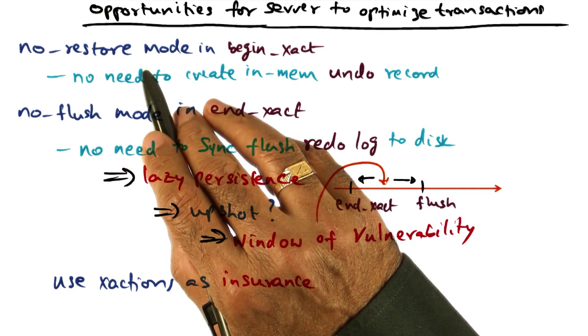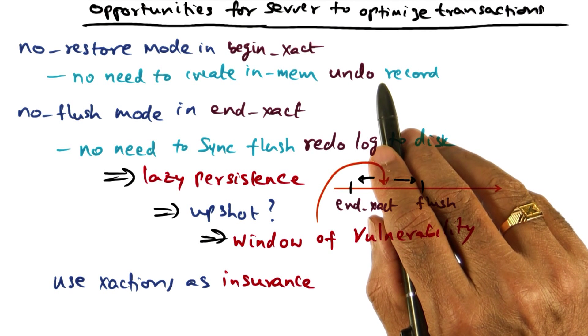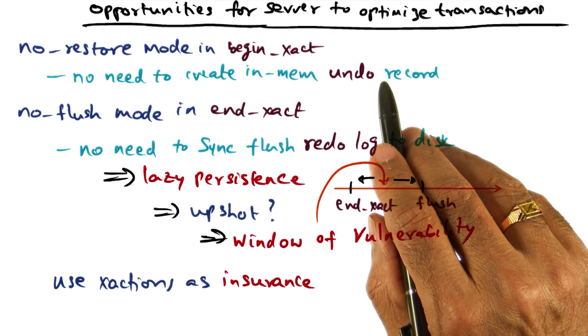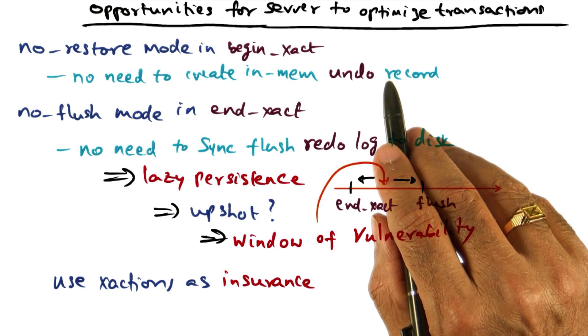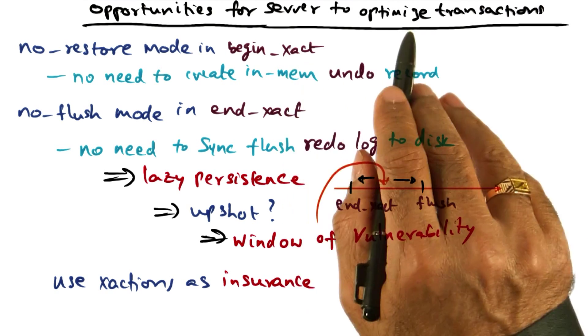That's what is meant by the no restore mode. So that reduces the amount of work that RVM has to do in doing a memory copy, and the application is going to gain because RVM is doing less work, which means the overhead in performing a transaction is going to be less as seen by the application.